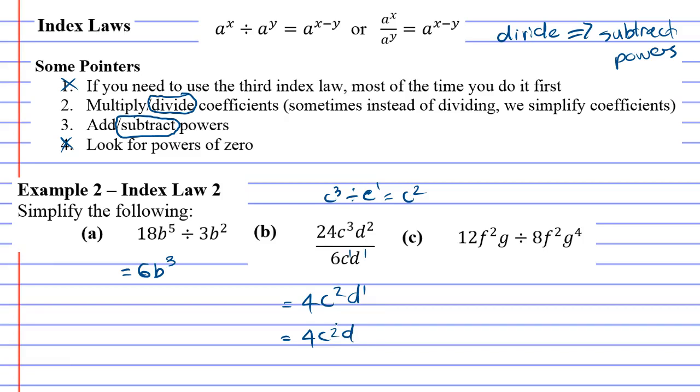Question c is our challenging question, and this is where the part in the brackets comes into play which says sometimes instead of dividing, we simplify coefficients. The reason it comes into play is when you try and divide 12 divided by 8, you get 1.5, you get a decimal, and we really don't like to have decimals.